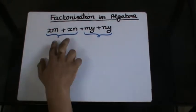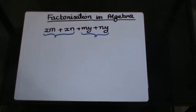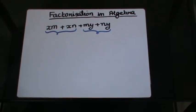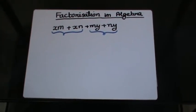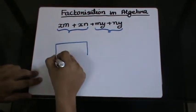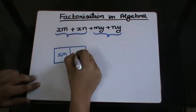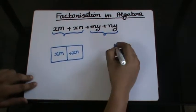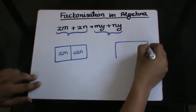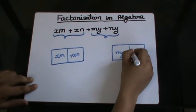I am now going to factorize these groups separately. So I will first draw a box for this one and write the elements here, xm plus xn. And similarly, for this group, I will write down my plus ny.